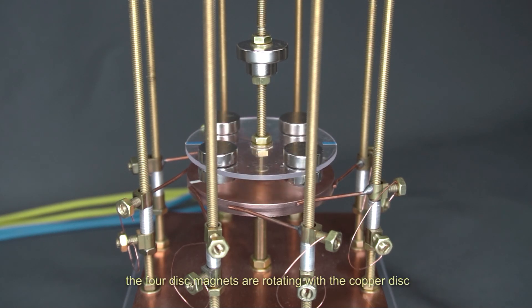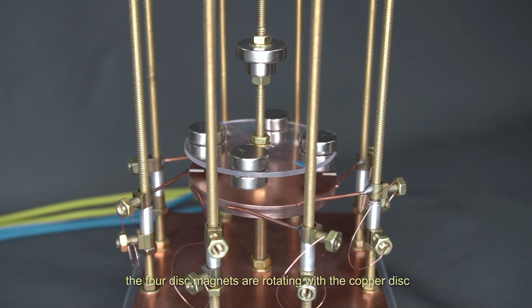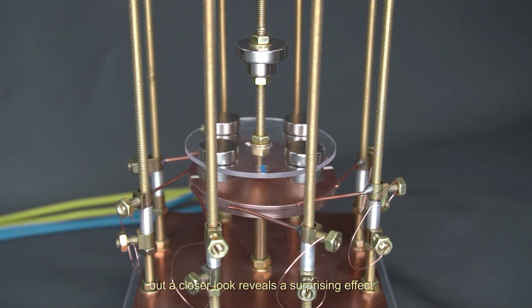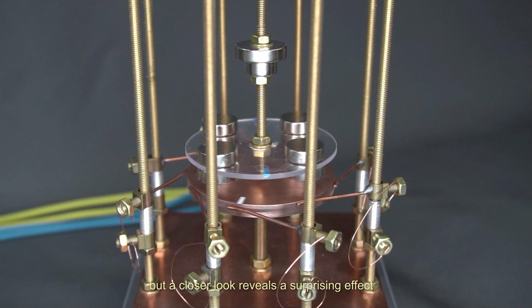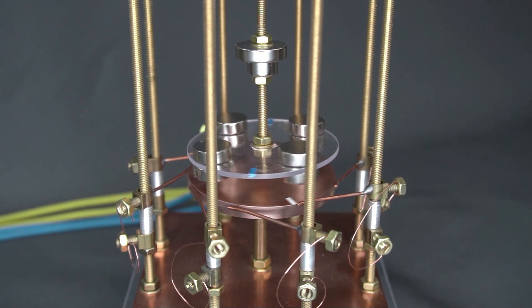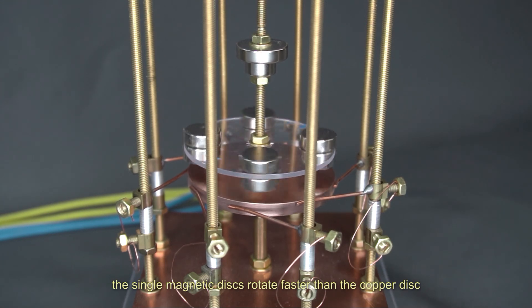The four disc magnets are rotating with the copper disc. But a closer look reveals a surprising effect. The single magnetic discs rotate faster than the copper disc.